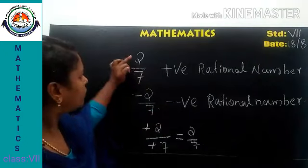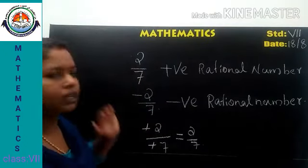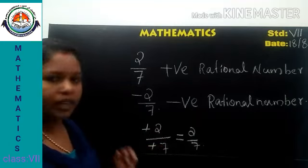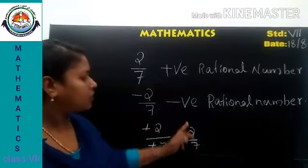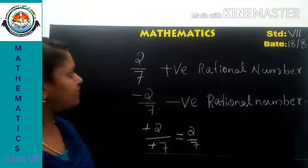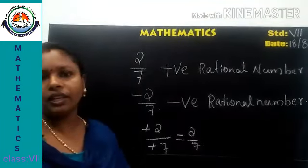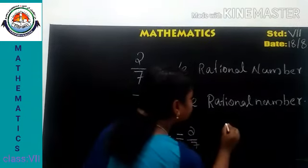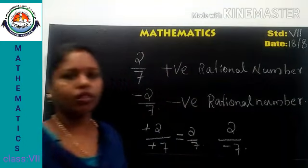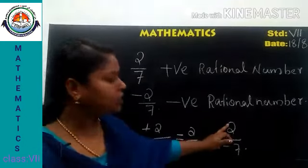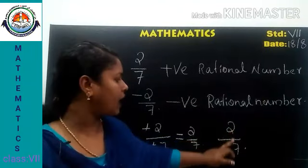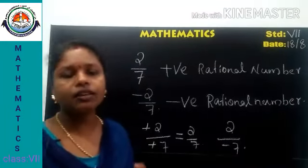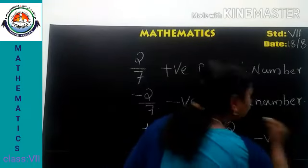So if the denominator and numerator are both positive, it is a positive rational number. If the numerator and denominator are both negative, the rational number will also be positive. We can say that if the numerator and denominator are of the same sign, the result will be a positive rational number. For example, 2 by negative 7: the numerator is positive and the denominator is negative.